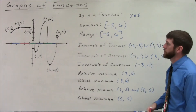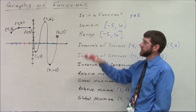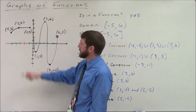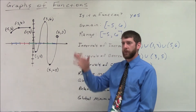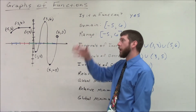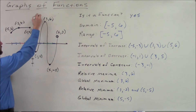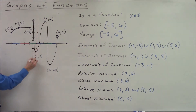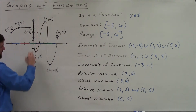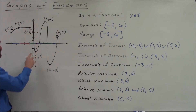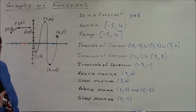First thing: is this a function? We determine if we have a function by seeing if it passes the vertical line test. Is there any vertical line that could be drawn on this graph that would intersect it more than one time? A vertical line represents all the y values for a specific x value. If a vertical line intersects one time, there's only one y value for that x value — that meets our definition of a function.